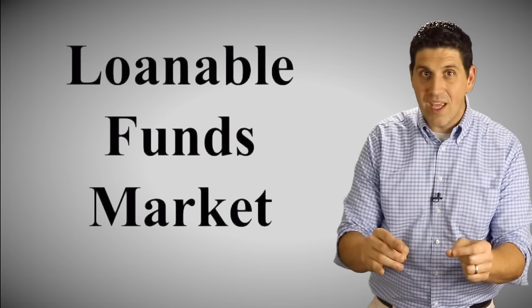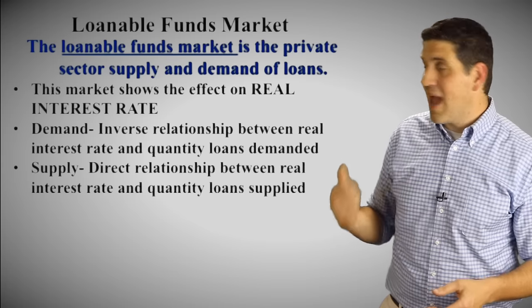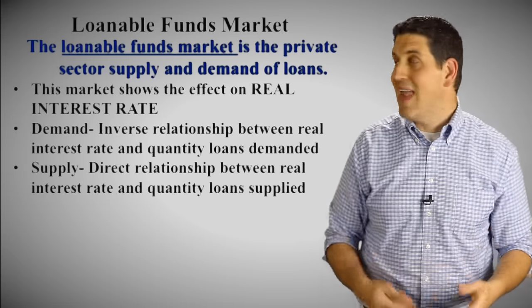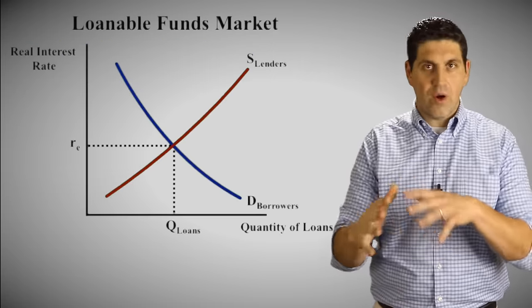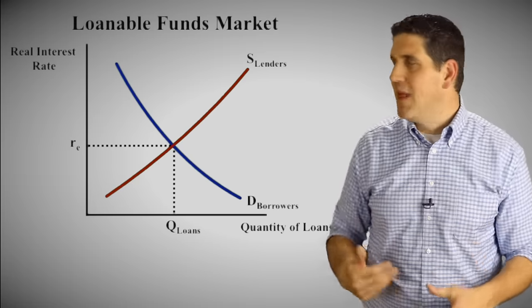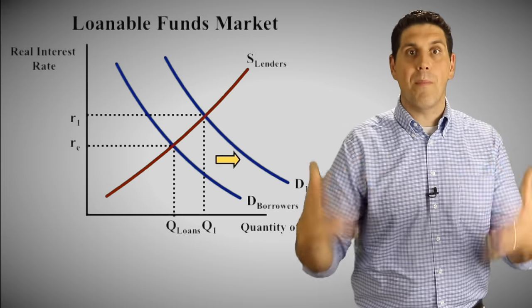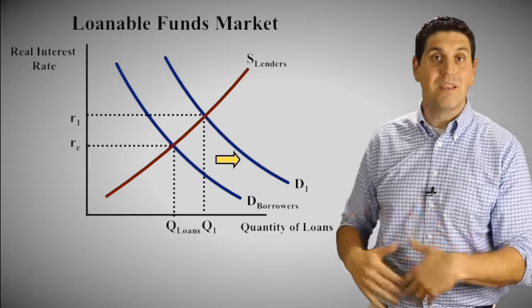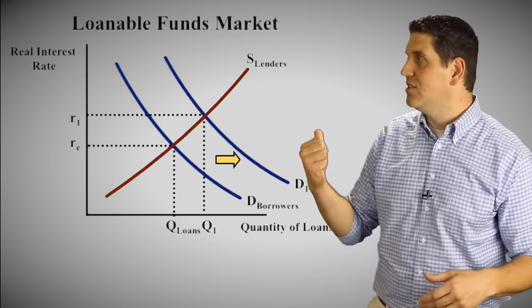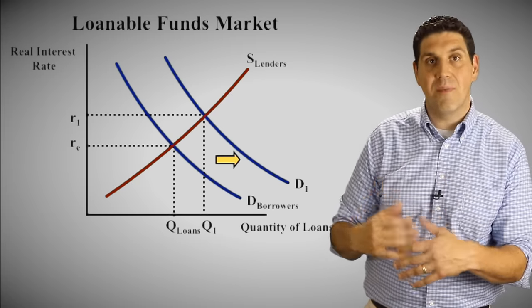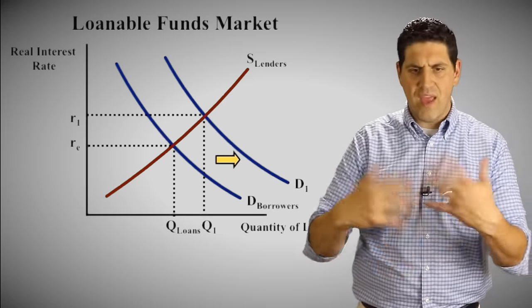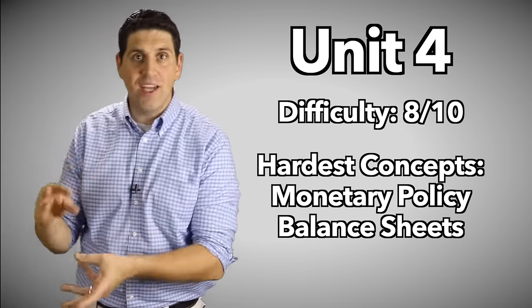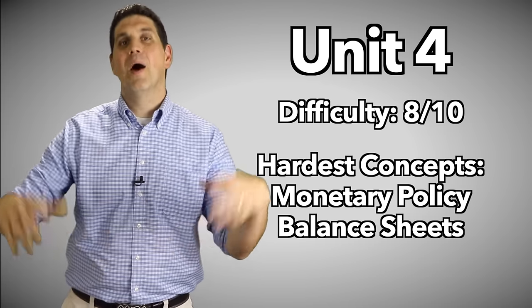The next concept is loanable funds — another key graph showing the demand and supply of loans. Demand for loans is by borrowers; supply is by lenders. Together they give you the real interest rate. This curve can shift on both sides. For example, if the government does a lot of borrowing, that increases demand for loans and interest rates go up. This graph shows the concept of crowding out: if the government deficit spends, it demands more money, increasing demand for loans, raising the real interest rate, meaning less investment and less consumption from people taking out loans. Overall, unit four gets eight out of ten difficulty because of its graphs and calculations bringing monetary policy concepts together.